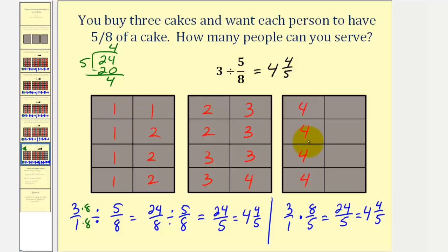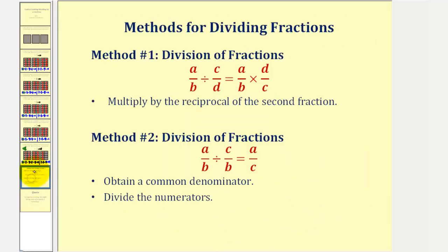Now that we've seen how to model division by a fraction, let's review the procedures by hand. There are two main ways. One way is, instead of dividing by c over d, multiply by the reciprocal d over c. The second method actually makes a bit more sense: if we obtain a common denominator, we can simply divide the numerators. For example, a over b divided by c over b equals a over c, or a divided by c. This works because if our denominators are the same, the pieces are the same size, and therefore a pieces divided by c pieces is just a divided by c. I hope you found this lesson helpful.